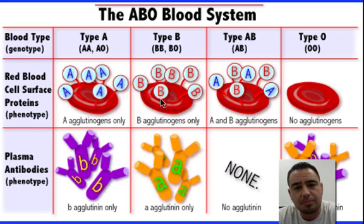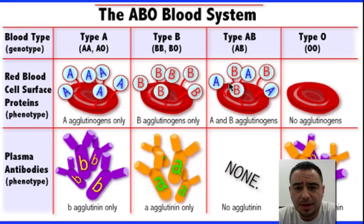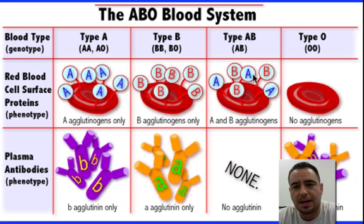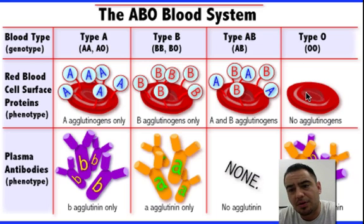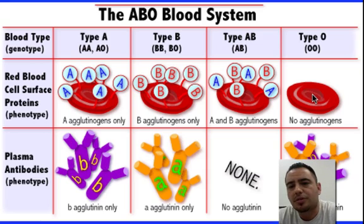Blood type B will only recognize its own blood. If you're blood type B and someone gives you blood type A, you're going to destroy it because you're not used to that blood — you'll make antibodies, destroy it, get sick and possibly die. If you get AB blood, you'll recognize the B part but not the A, so your immune system attacks the A antigens and destroys that cell, causing a blood clot. But if blood type O gives you blood, since there are no proteins, you won't make antibodies and it'll roam freely. That's why blood type O is the universal donor — a person with blood type O can give blood to pretty much anyone, and that blood will be accepted by anyone.